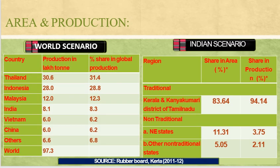Regarding area and production of rubber in the world scenario, Thailand is the major rubber producing country, followed by Indonesia, Malaysia, and India. India ranks 4th in rubber production, then Vietnam, China, and others. Thailand's production is 30.6 lakh tonnes with a 31.4% share. In India, Kerala and Kanyakumari district of Tamil Nadu are the most rubber producing states, with 83.64% of area and 94.14% of production. Rubber is also cultivated in northeastern states and other non-traditional states.